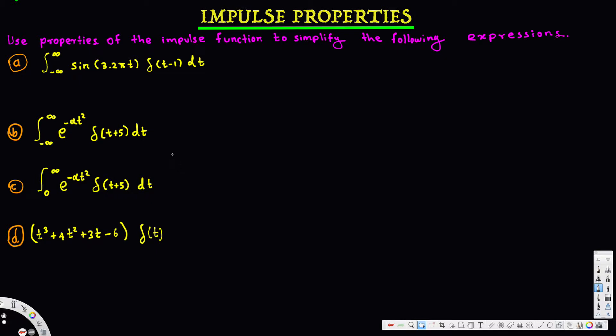Let's look at this problem. This question asks us to use properties of the impulse function to simplify the following expressions. The first expression is an integral going from negative infinity to infinity with a signal multiplied by an impulse. When we have a signal multiplied by an impulse, the integral equals the signal evaluated at the location of the impulse. To find the location, equate t minus one to zero.